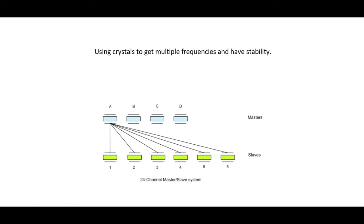One of the first multi-channel systems was Citizens Band radio, and to achieve the multiple channels, quartz crystals were used in a master-slave arrangement. On screen we've got a 24-channel system. The 24-channel system has three master crystals and six slave crystals. We can mix one master against each slave to get six channels, so using one master and mixing it with six slaves we can get six different channels or six different frequencies. Then we turn that master off, turn the next one on, and get another six frequencies. Masters C and D will all give us six frequencies, so one master at a time against six slaves gives us a total channel capacity of 24 channels.